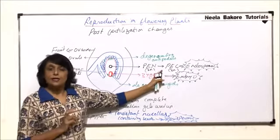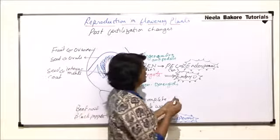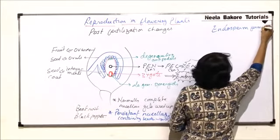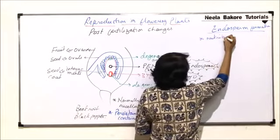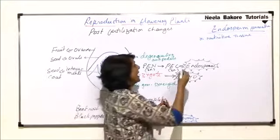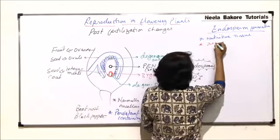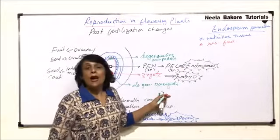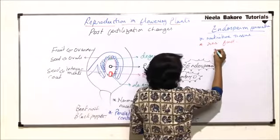Now let us come to one important post-fertilization change — that is the formation of endosperm. Endosperm is the nutritive tissue. It is going to supply nourishment to the developing embryo; that is why it contains nutritive material or reserve food. It supplies all required nutrients to the developing embryo.